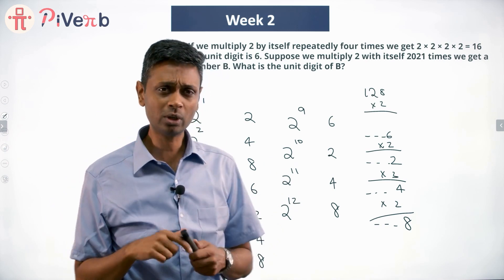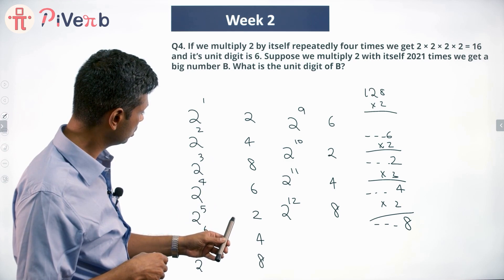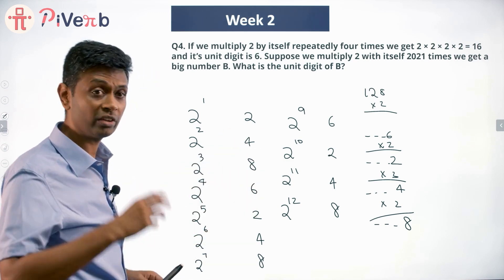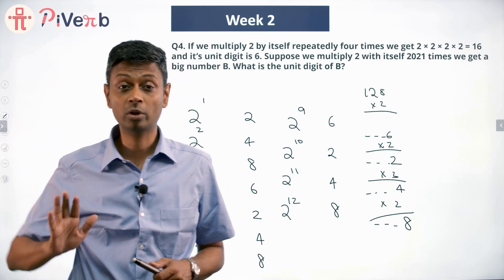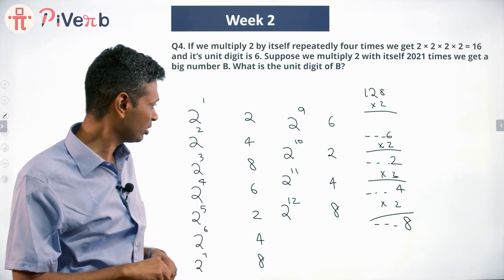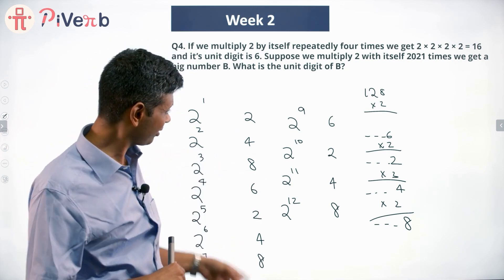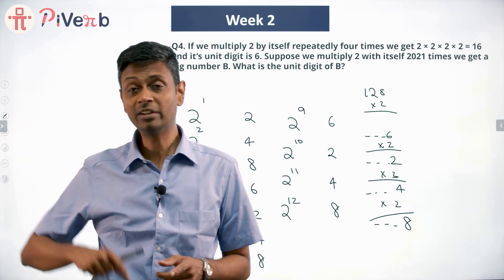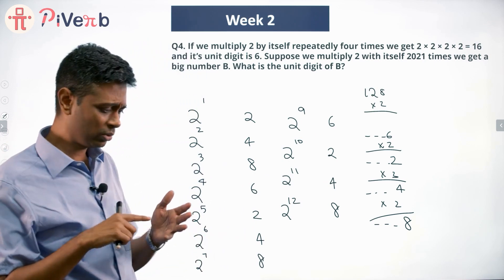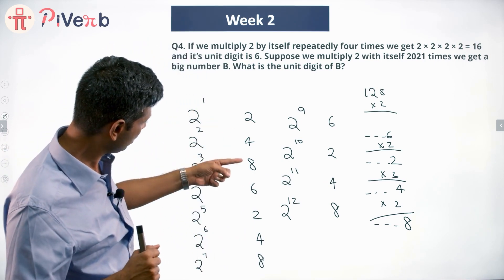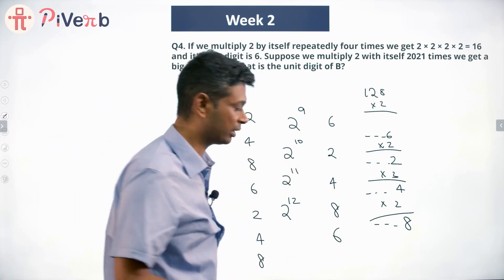Now let's look at these units digits: 2, 4, 8, 6, 2, 4, 8, 6, 2, 4 — do you see a pattern? All of these are even numbers — obviously a power of 2 cannot be odd. Among even digits, we only see 2, 4, 6, 8. It cannot end in 0, because a number ending in 0 must be a multiple of 5, and this is only a power of 2. So it ends only in 2, 4, 6, or 8, and the pattern is 2, 4, 8, 6 repeating.